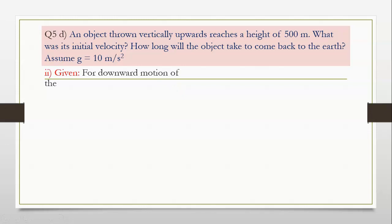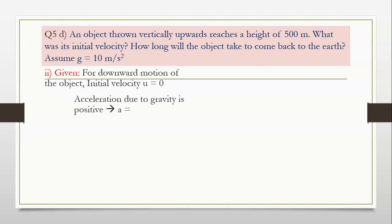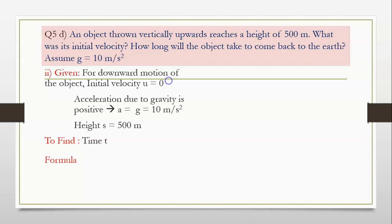For downward motion of the object, initial velocity u will always be 0. Acceleration due to gravity is positive. A is equal to g is equal to 10 meter per second square. Height s remains the same — it will be 500 meter. To find out, we have to write time taken, as the question is: how long will the object take to come back?